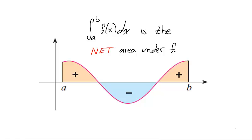In this section, we will be interested in the total area between curves. That is, we will not allow negative heights in the rectangles of the Riemann sum. To accomplish this, we use absolute values.